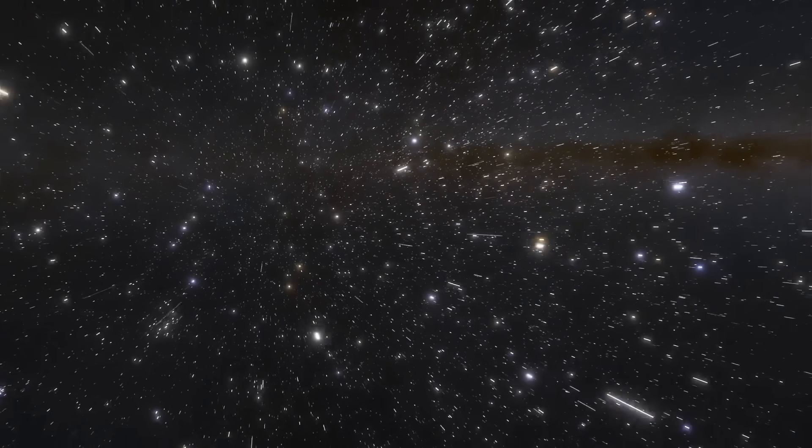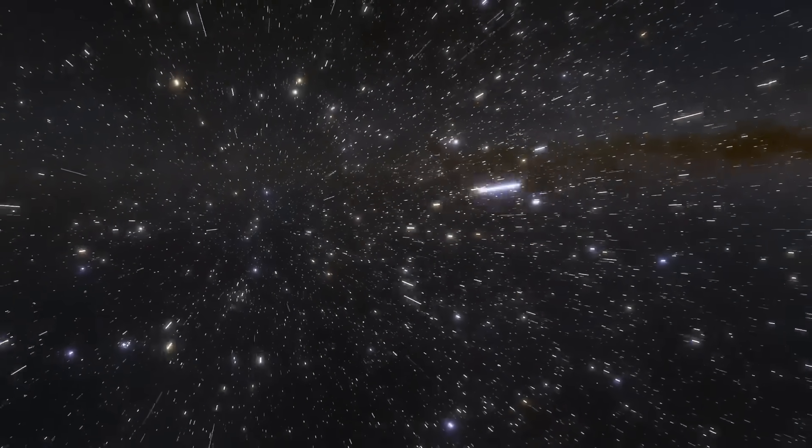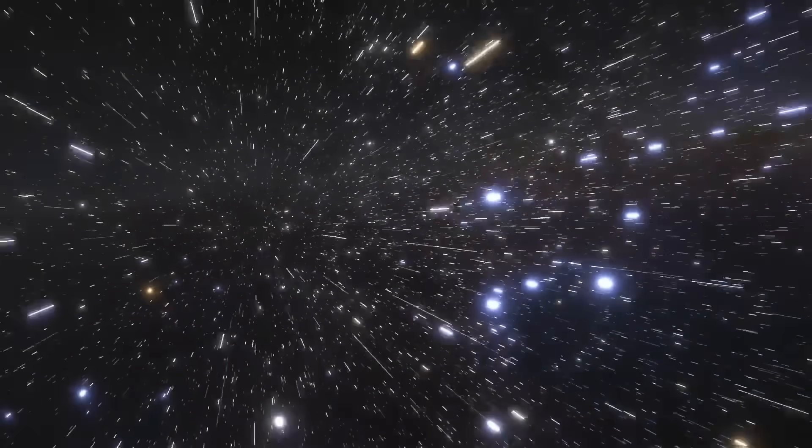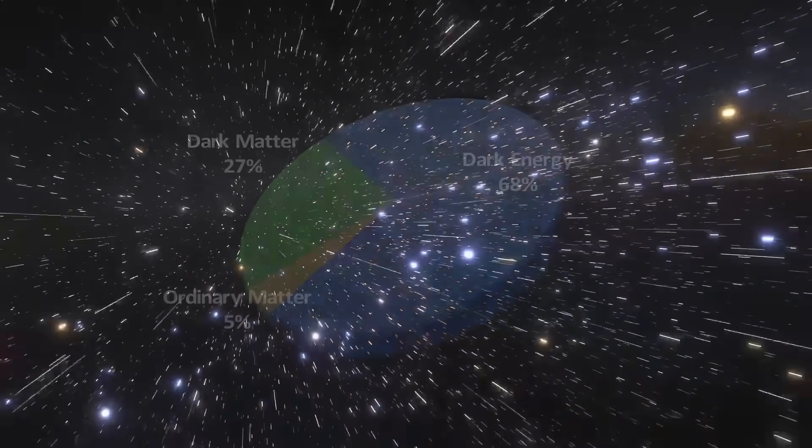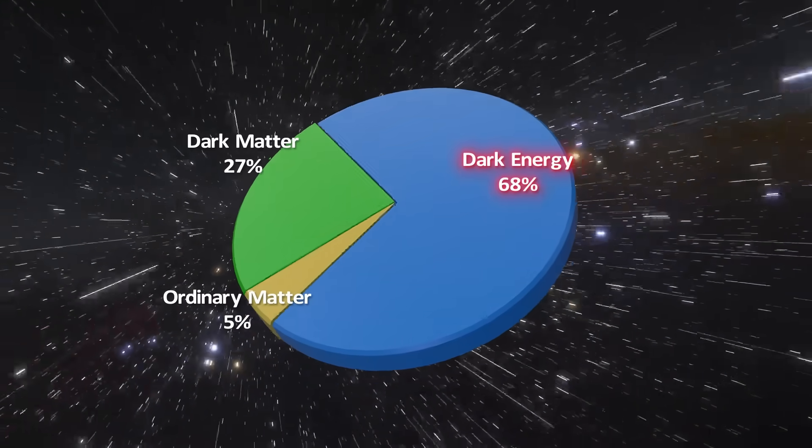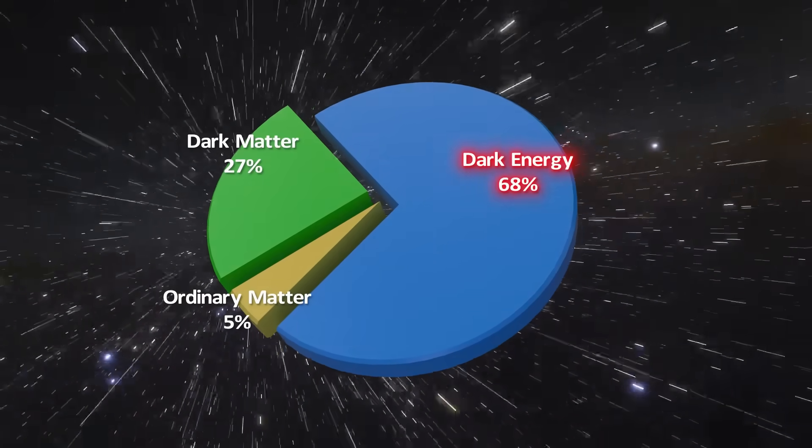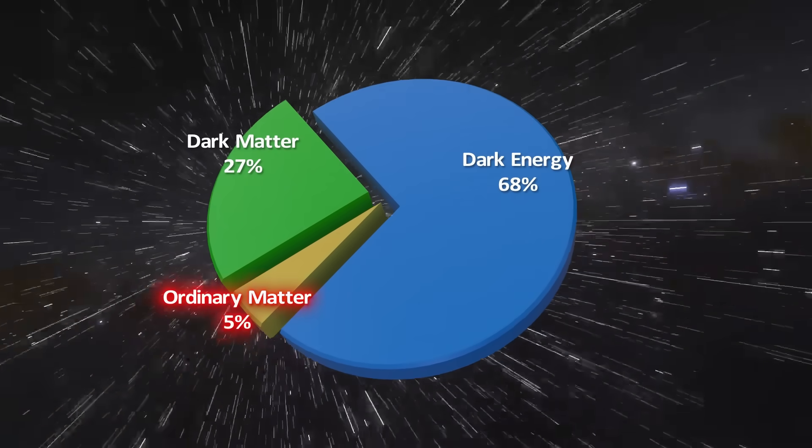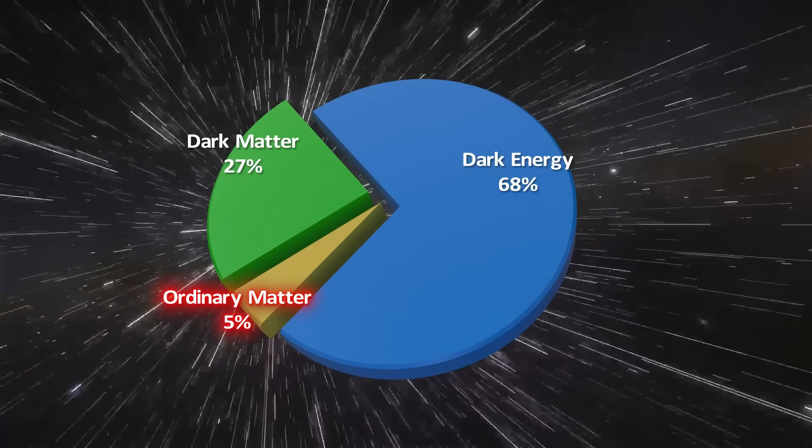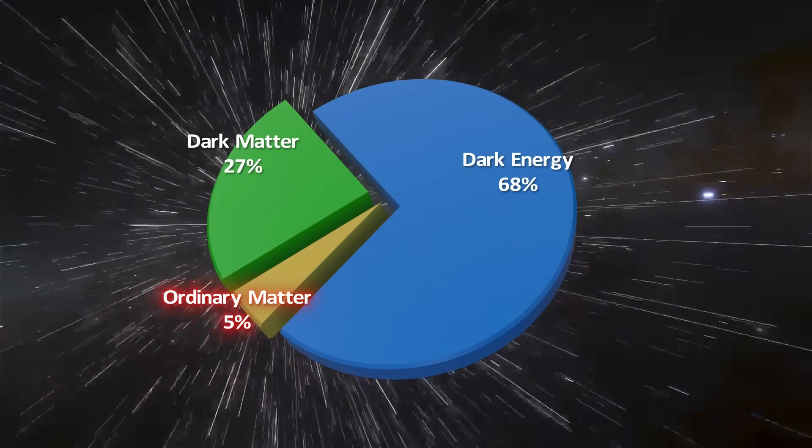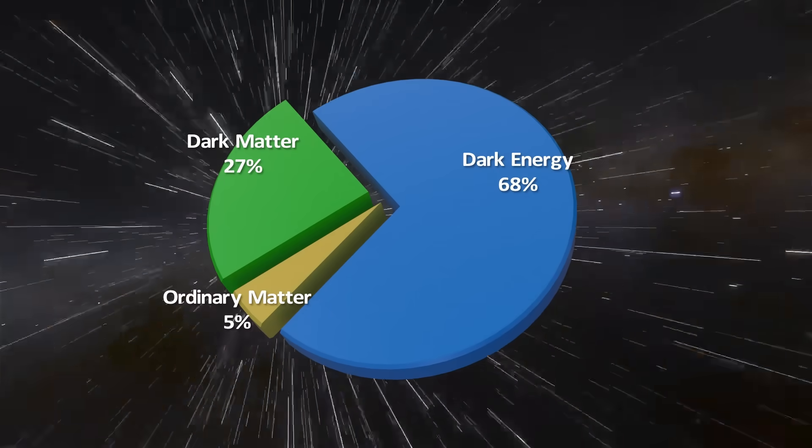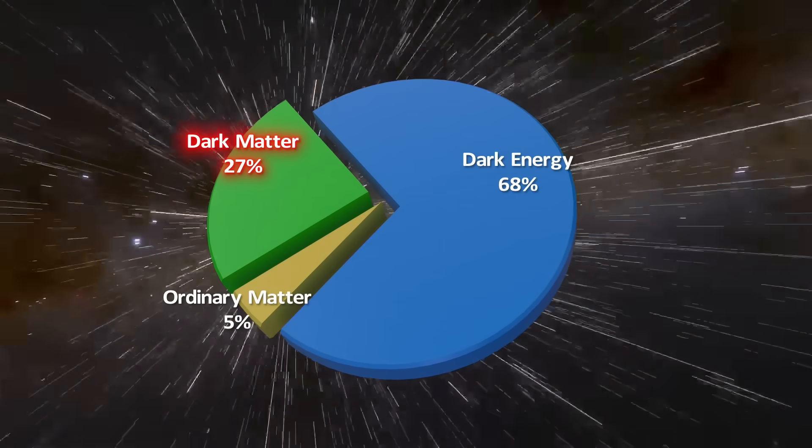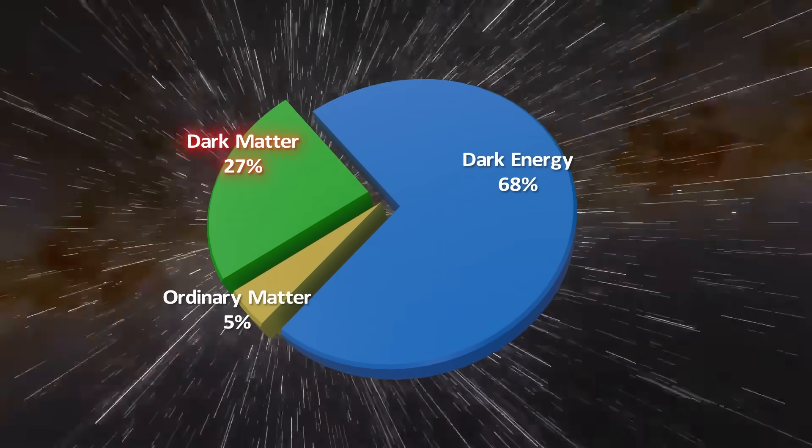We don't know exactly what dark energy is. It could be a new kind of energy field, or it could be an intrinsic property of empty space itself. But whatever it is, it's not a small effect. Dark energy makes up 68% of the total energy in the universe. In contrast to normal matter, everything you've ever seen or touched only accounts for about 5% of the total energy density, and the remaining 27% being made up of dark matter, which is yet another mysterious component with attractive gravitational properties.